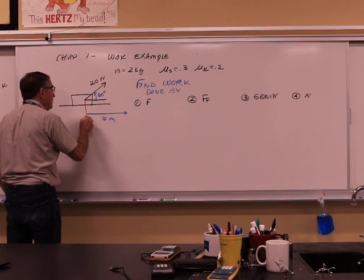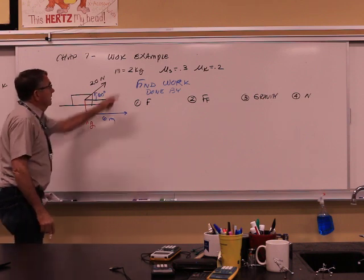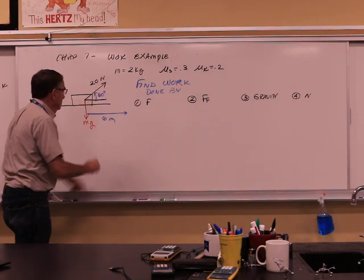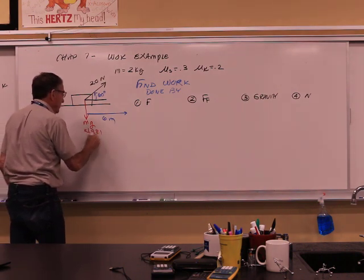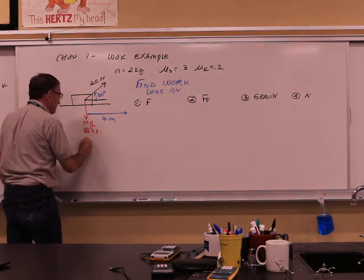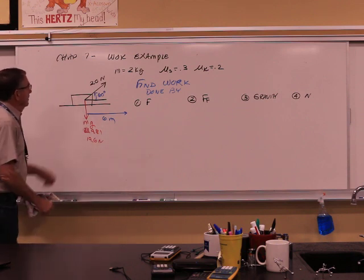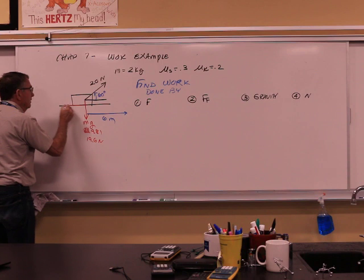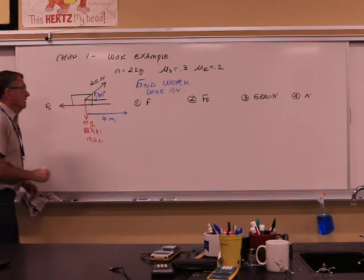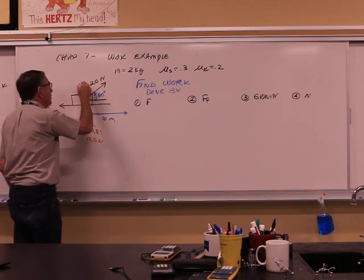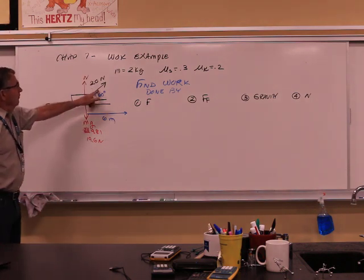What pulls down? Mg. Mass is two kilograms. Two times 9.8 is 19.6 newtons. What pulls back? The force of friction, this way. This is the normal force. And there's the force F.